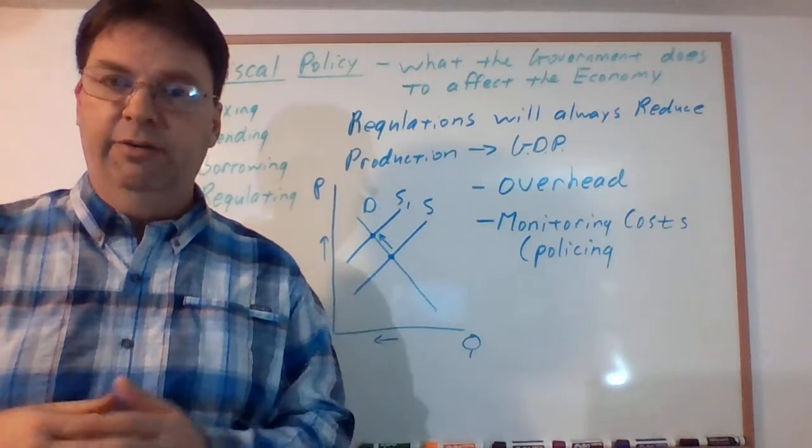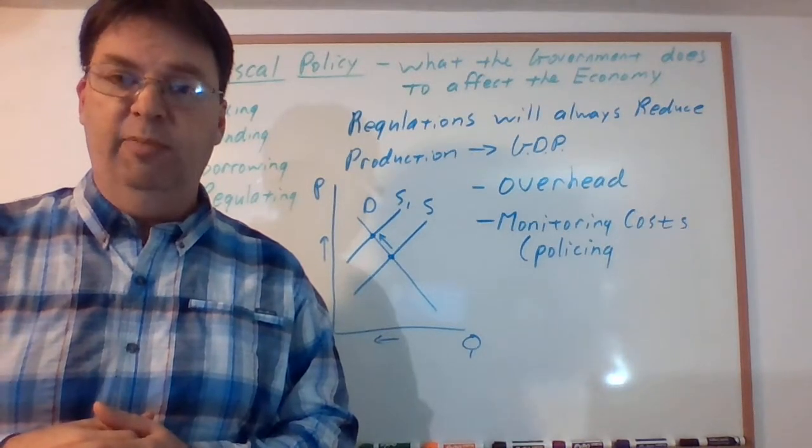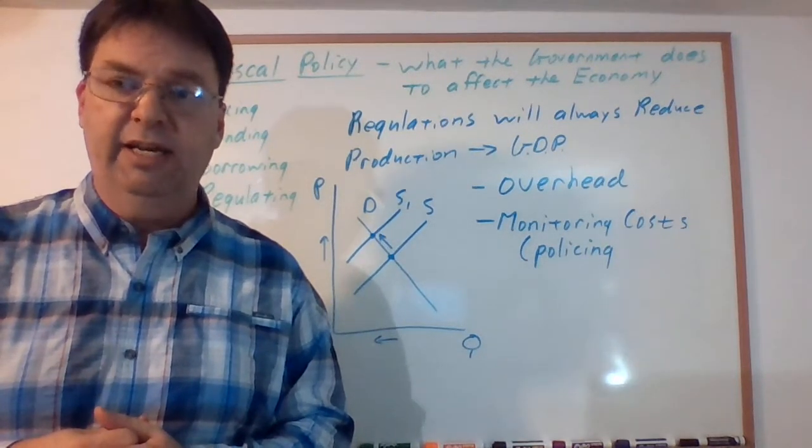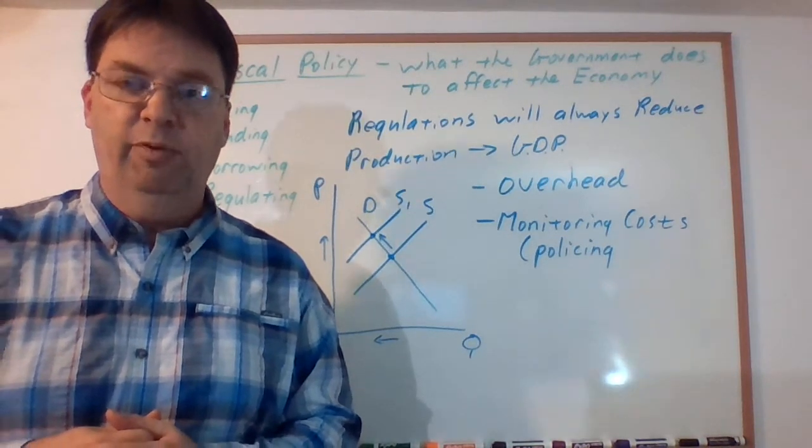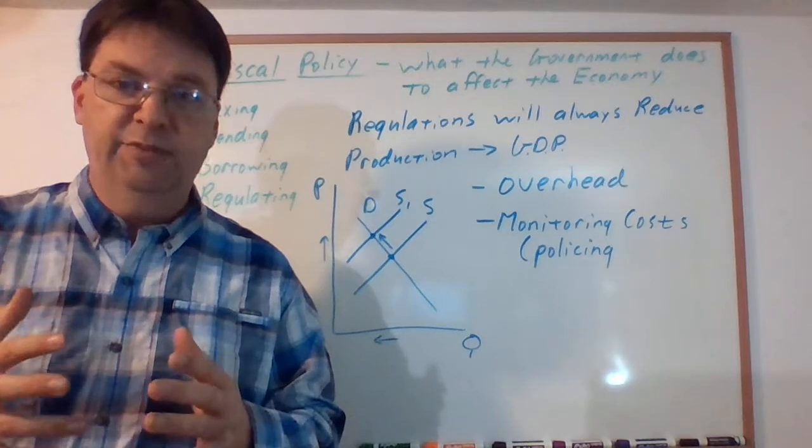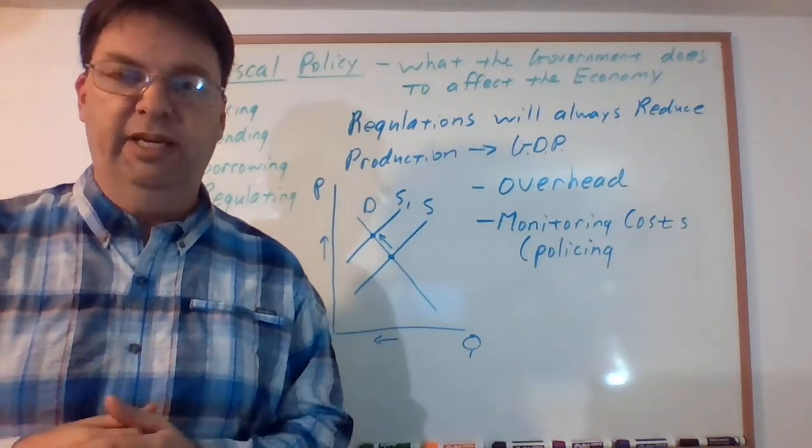If you say we need to put scrubbers on coal factories so they're not belching out smoke, well okay, that's a very desirable thing and almost everyone would say that's a good idea. But it will reduce GDP. There will be less of whatever it is produced if you put a regulation on it.